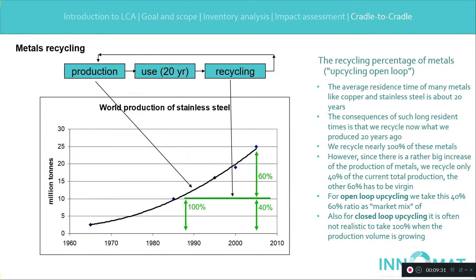What we do in LCA is that we look at materials we use in a new product — the input of our production process — rather than the recycling potential in the far future at the end of life. In practice, the input of our current production processes is the market mix of virgin materials and recycled materials. In normal cases, you don't even know the origin of the materials, so we take the global average market mix in LCA. In our example, that is 60% virgin and 40% recycled.